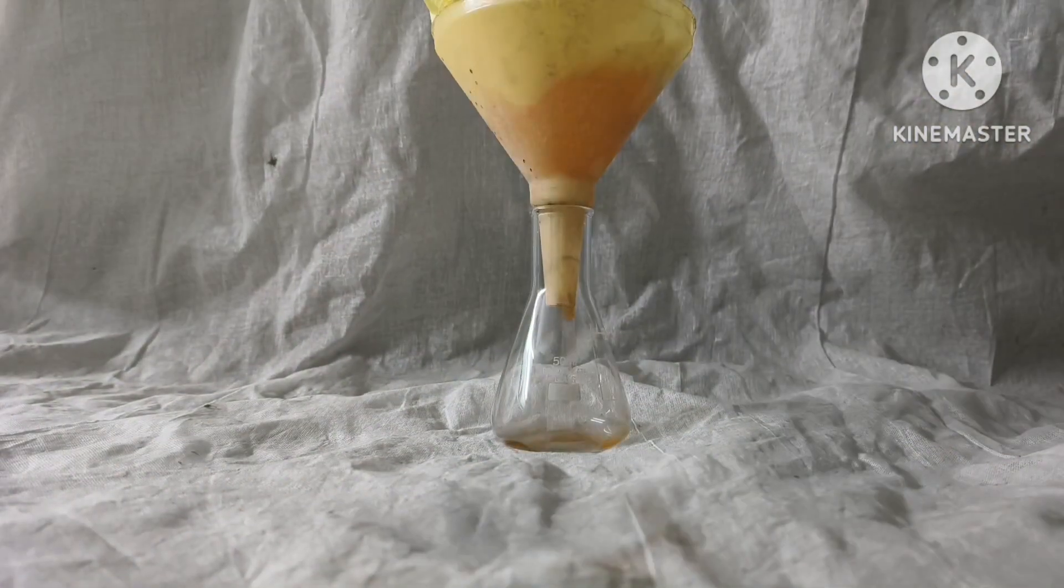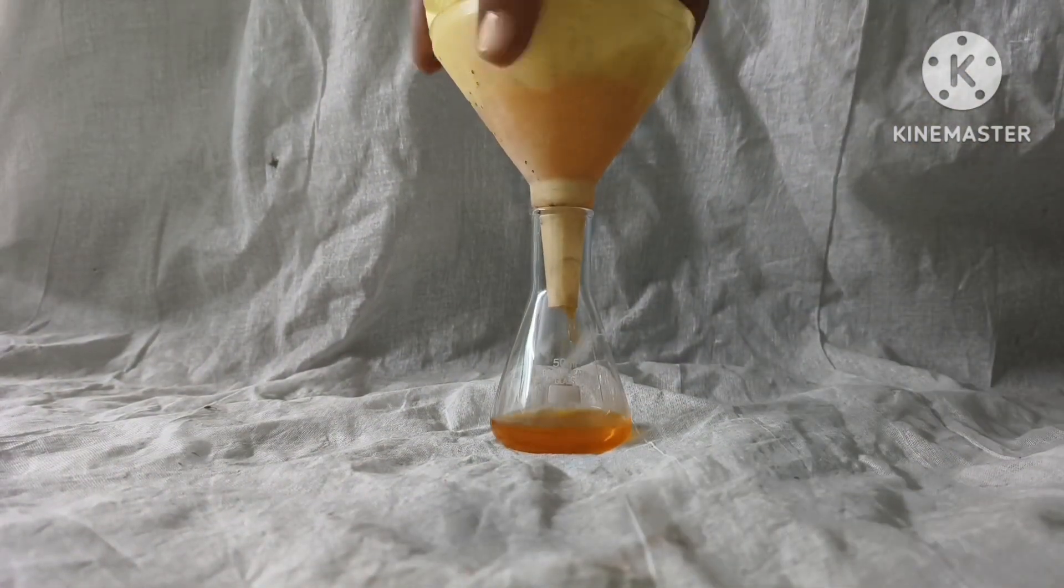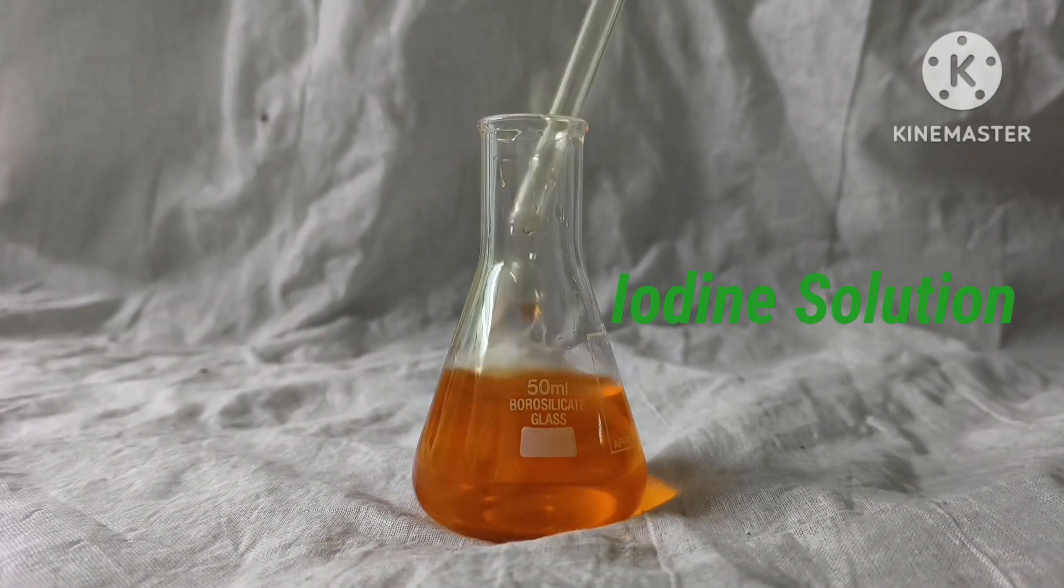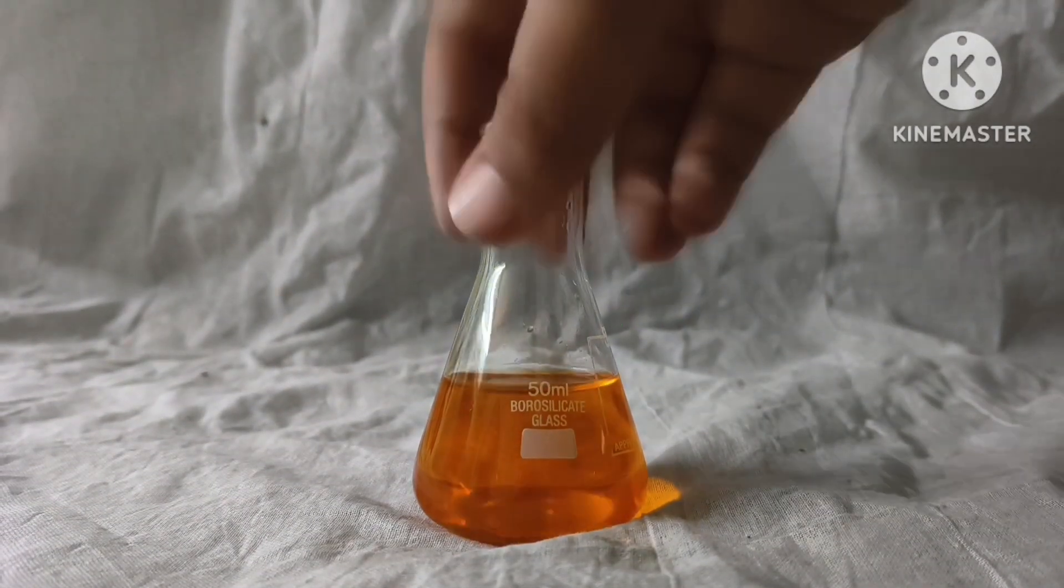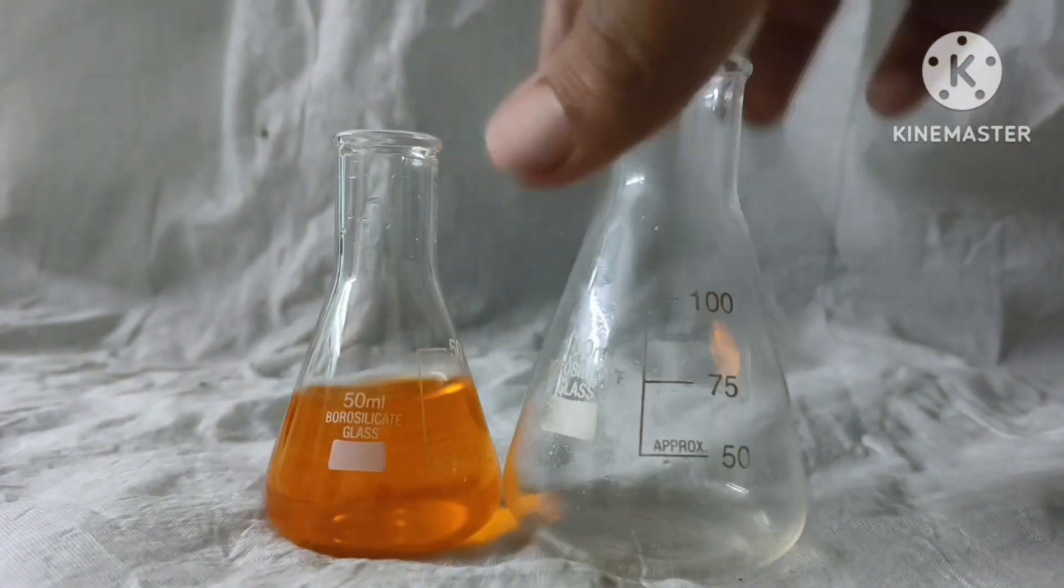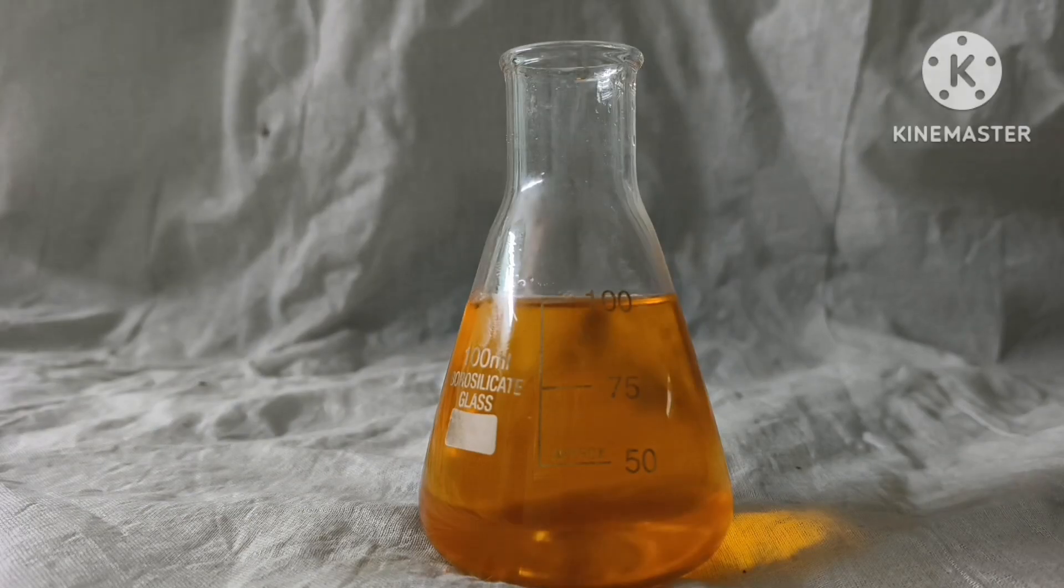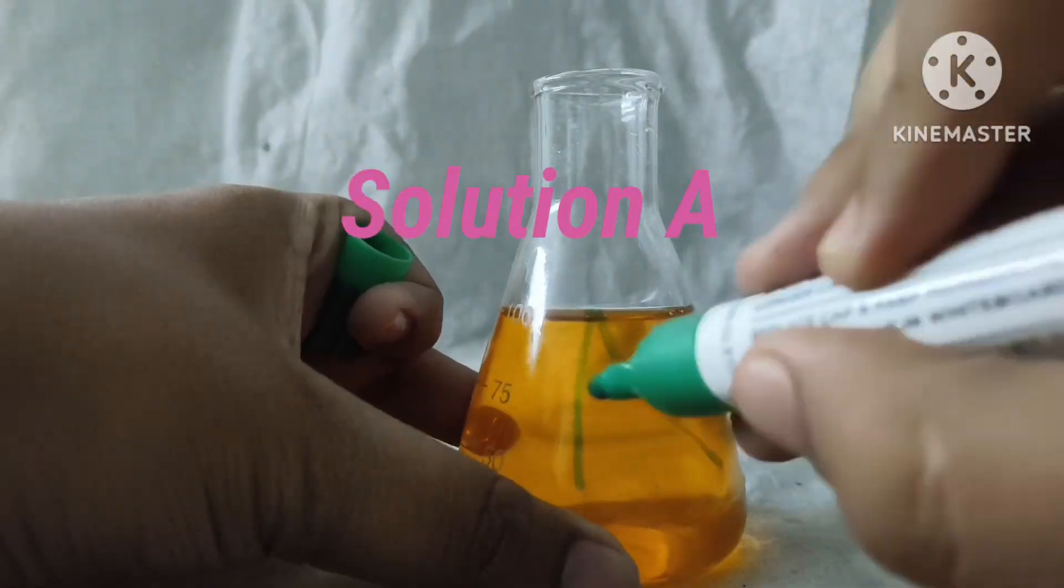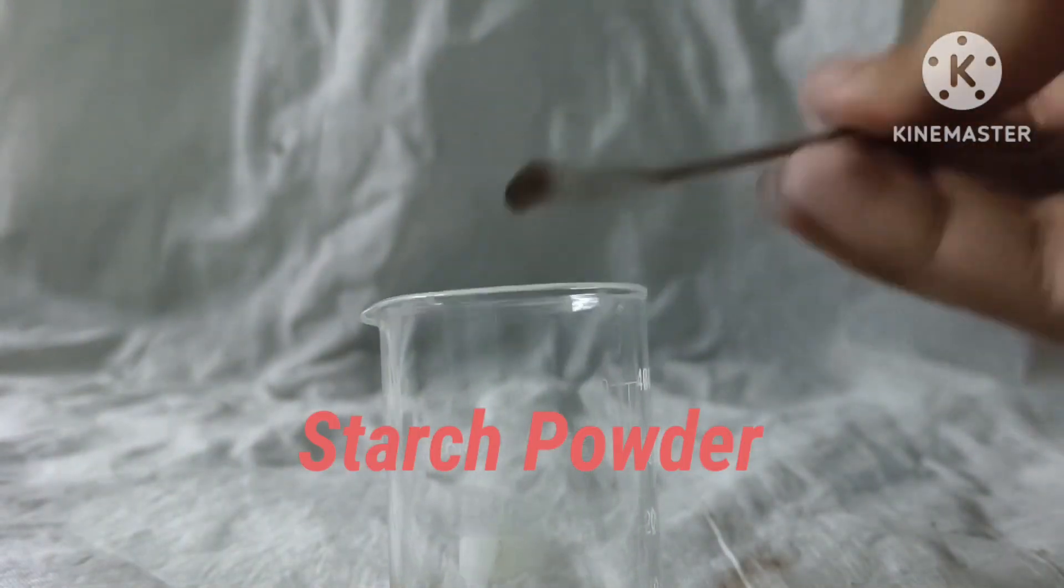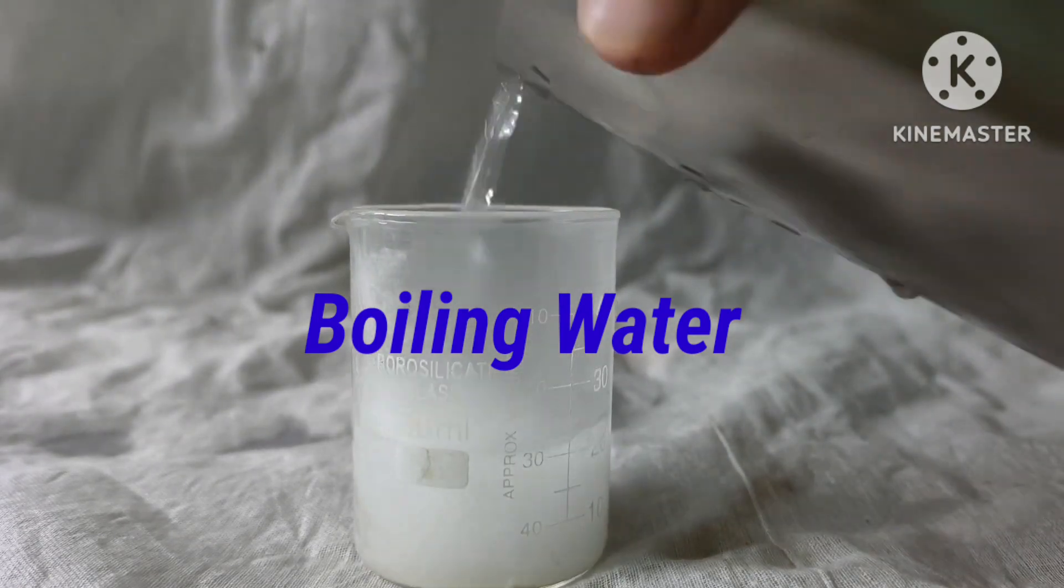I added some iodine solution. Now I added some distilled water and our solution is ready, and I marked it as solution A. I took corn starch in a beaker and added some boiling water, and filtered the solution with tissue paper to get better results.